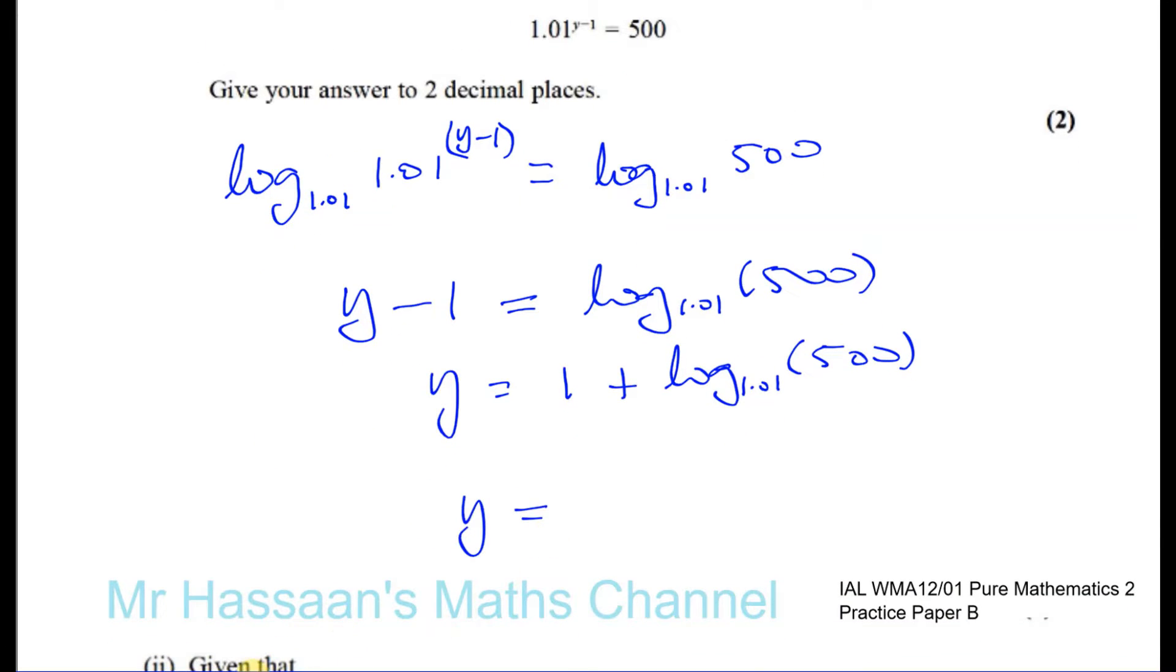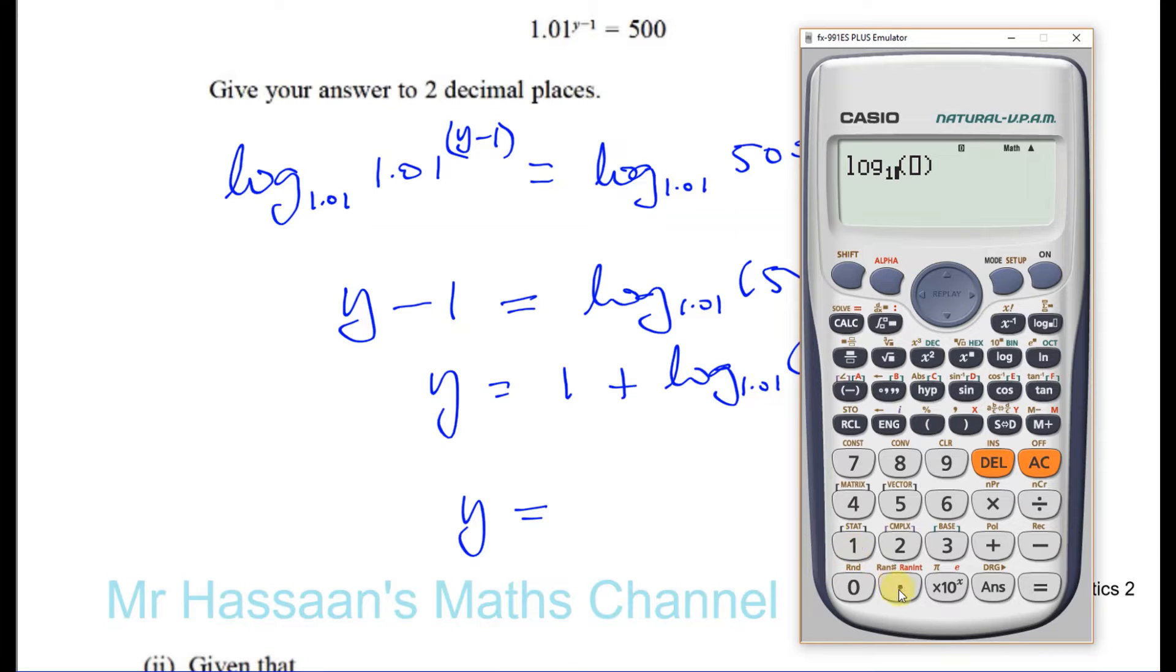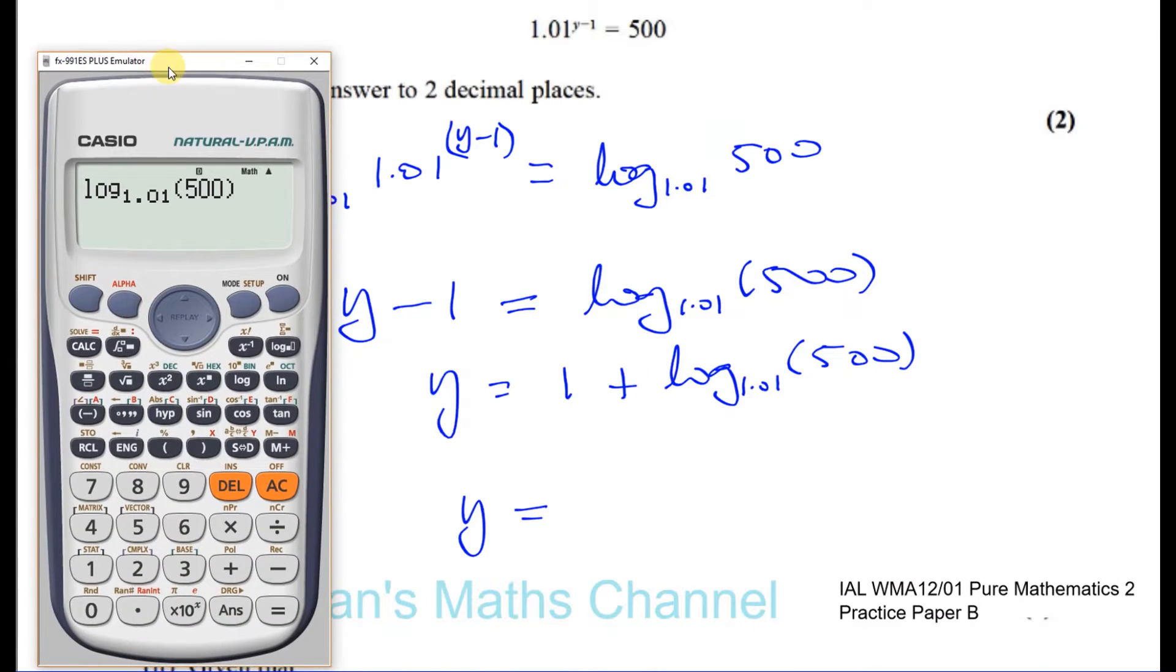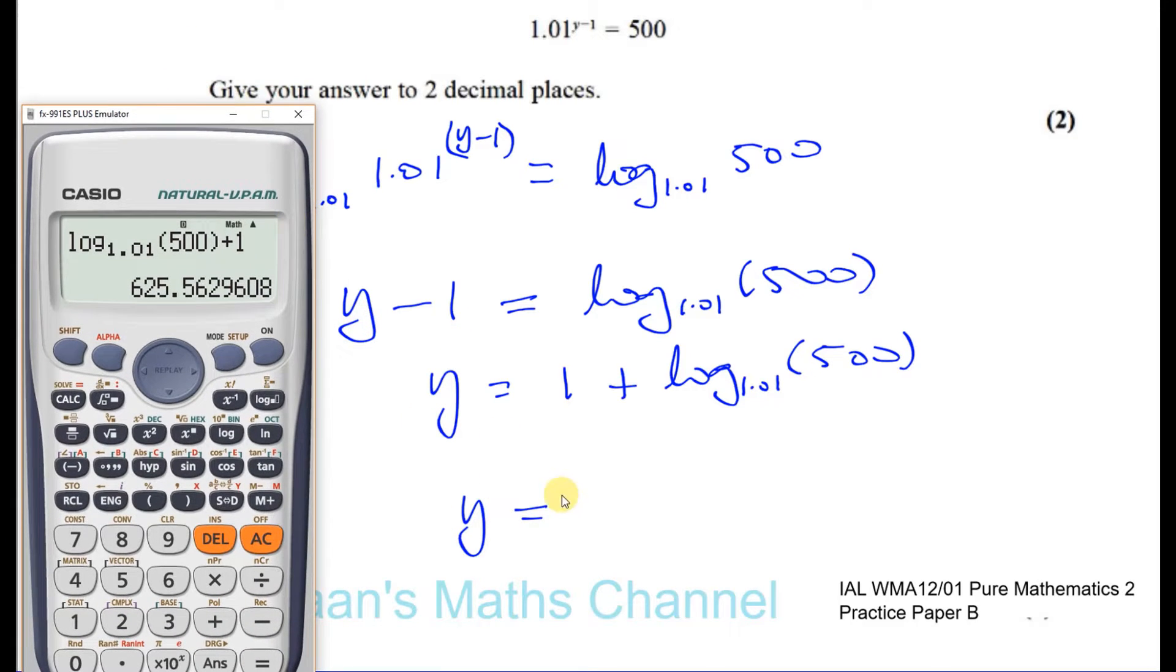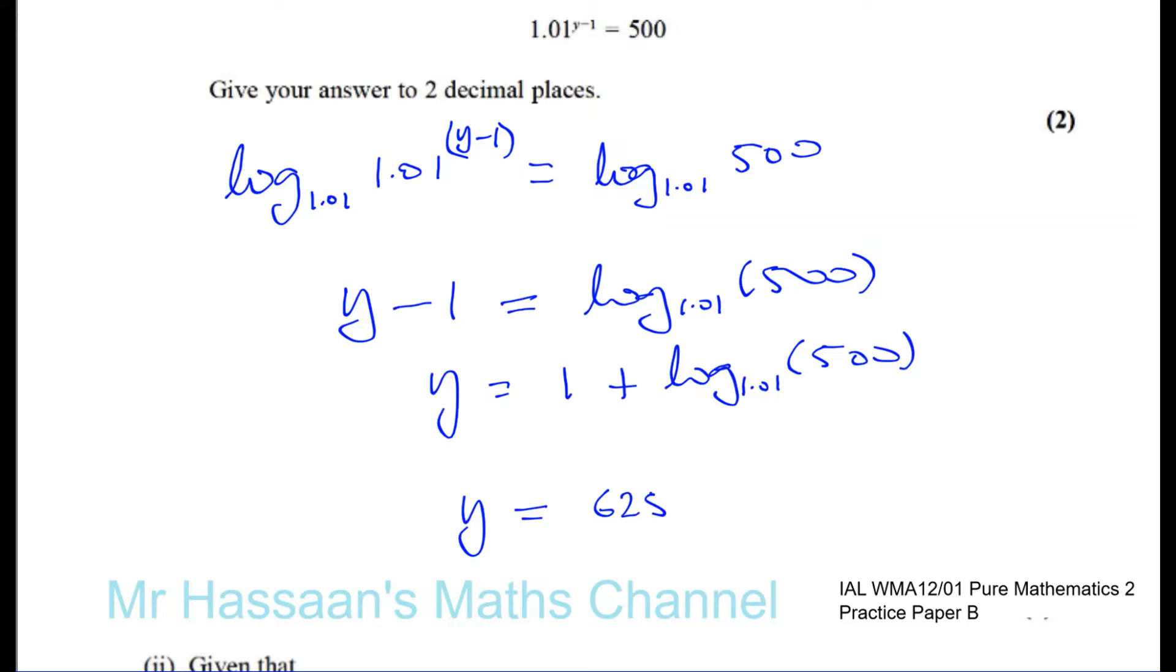Simple as that. So we say log to the base of 1.01, 500, okay, plus 1. Add 1 to that. Oops, no, 500. Close the bracket and then add 1. And that gives us two decimal places, so we'll write it down to a few more first. So 625.563, right, 625.56295 dot dot dot dot, two decimal places is going to be 625.56.